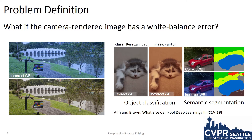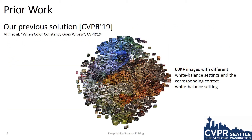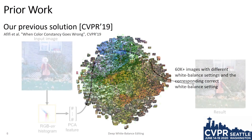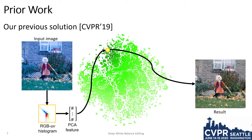We have shown that having the wrong white balance setting can have adverse effects on tasks such as object classification and semantic segmentation. Last year at CVPR 19, we presented a data-driven solution to this problem. In that work, we rendered over 60,000 images with the wrong white balance and with the corresponding correct white balance. Given an input image, our solution used a histogram feature to look up similar examples in our dataset to compute a correction function.